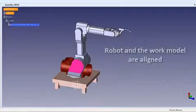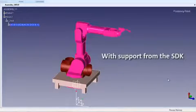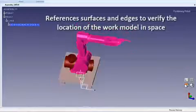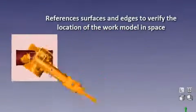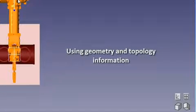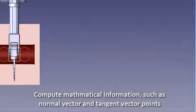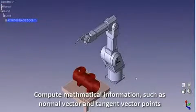Next, the robot and work model are aligned. The application, with support from the SDK, references surfaces and edges to verify the location of the work model in space, using geometry and topology information, including functionality to compute mathematical information, such as normal vector and tangent vector points.